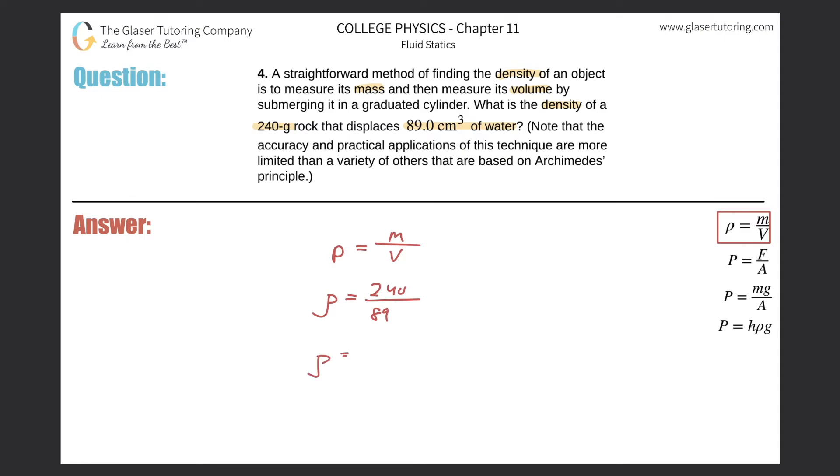And then when we calculate the answer, it's 240 over 89. This is easy peasy, right? I wish all the questions were like this in physics. Two point, so we get a value of about 2.70. And this will now be in grams per cubic centimeter.